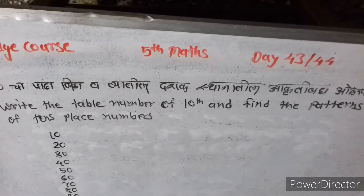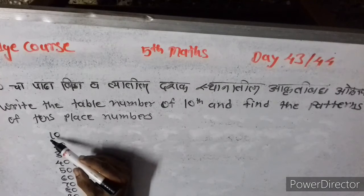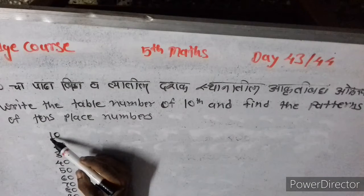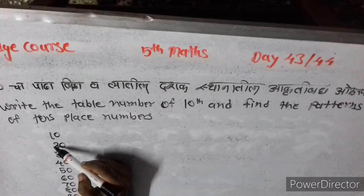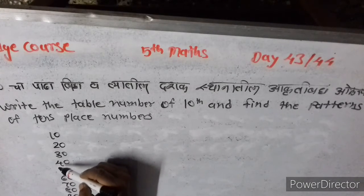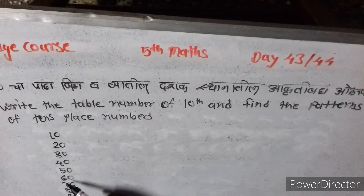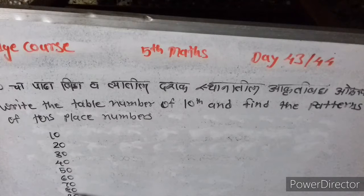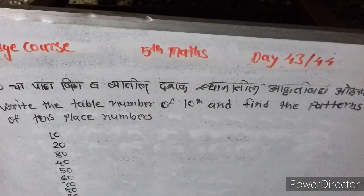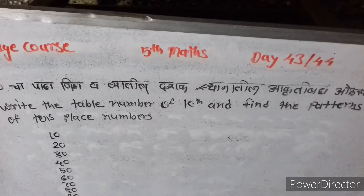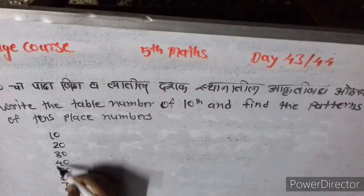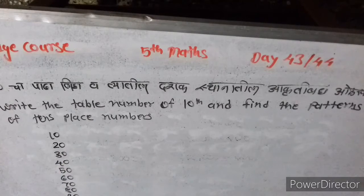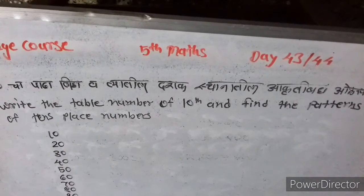The zero of the unit place and the number of 10 place is increased one by one. One plus one is two, two plus one is three, three plus one is four, four plus one is five, five plus one is six, six plus one is seven, seven plus one is eight, eight plus one is nine, nine plus one is ten. The unit is same and the 10 place number are increased by one.